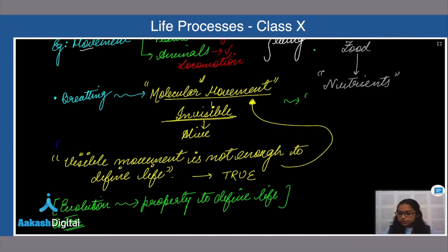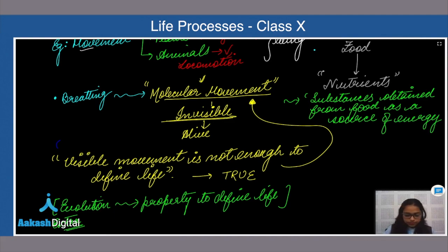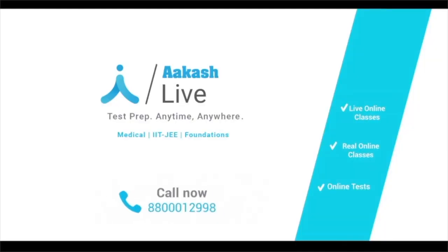So nutrients are the substances obtained from food. Obtained from food as a source of energy. So it is a source of energy used for biosynthesis.